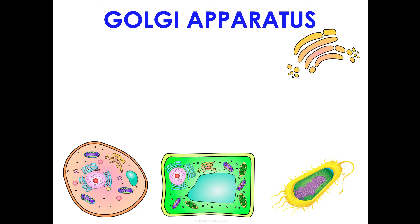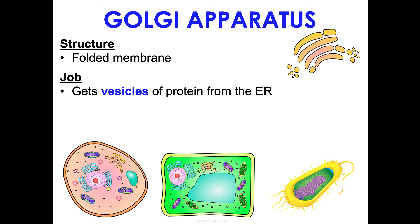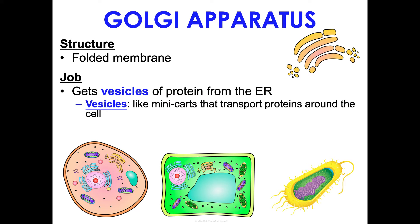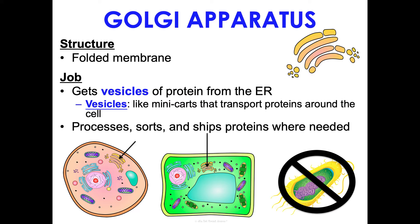The Golgi apparatus, also called the Golgi body, looks similar to the ER but is not attached to the nucleus — it's always separate. It's just a bunch of folded membrane. Its job is to receive vesicles of protein from the ER, process and sort them further, and then ship the proteins where they need to go. Vesicles are mini carts that transport proteins around the cell — from the rough ER to the Golgi and onward. Not found in prokaryotes.